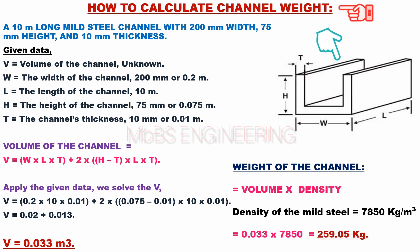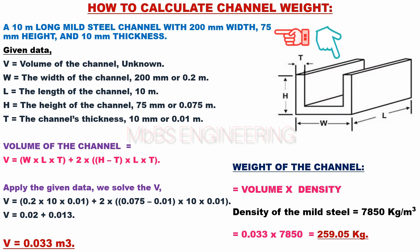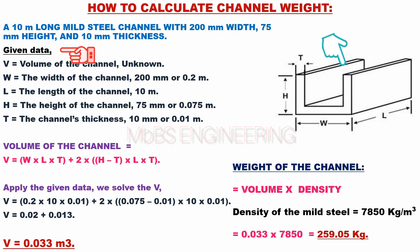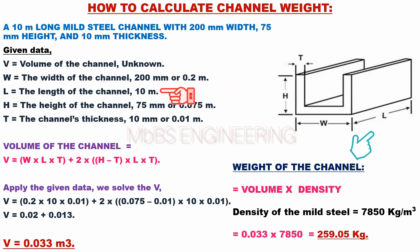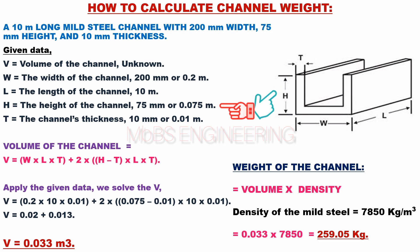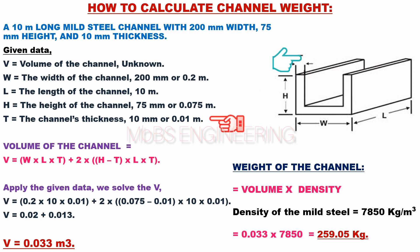We learn how to calculate the weight of mild steel channel materials. Given a 10-meter long mild steel channel with 200 millimeters width, 75 millimeters height, and 10 millimeters thickness. Given data: V equals volume of the channel (unknown); W equals width = 200 millimeters or 0.2 meters; L equals length = 10 meters; H equals height = 75 millimeters or 0.075 meters; T equals thickness = 10 millimeters or 0.01 meters.